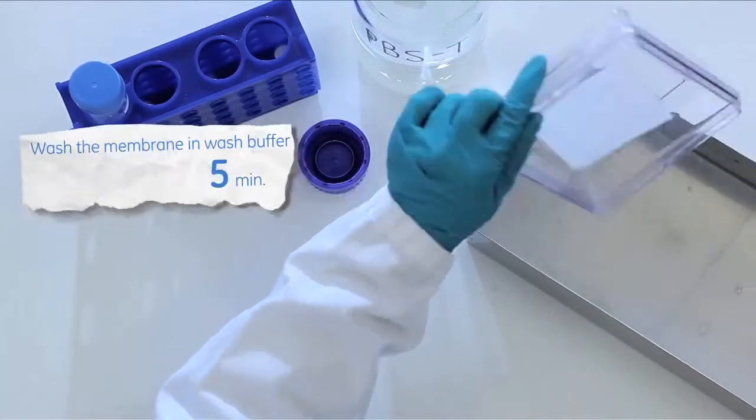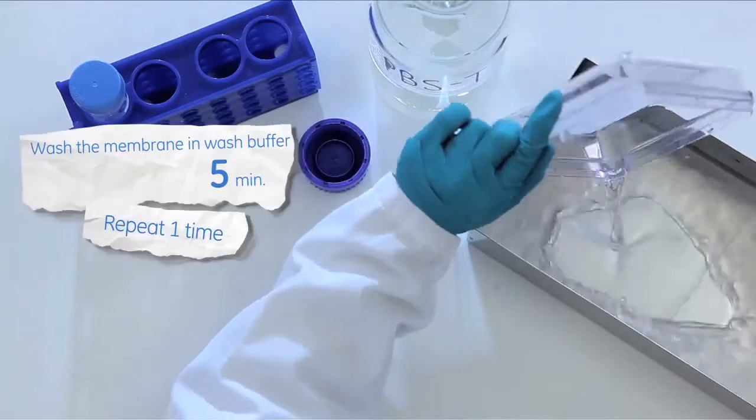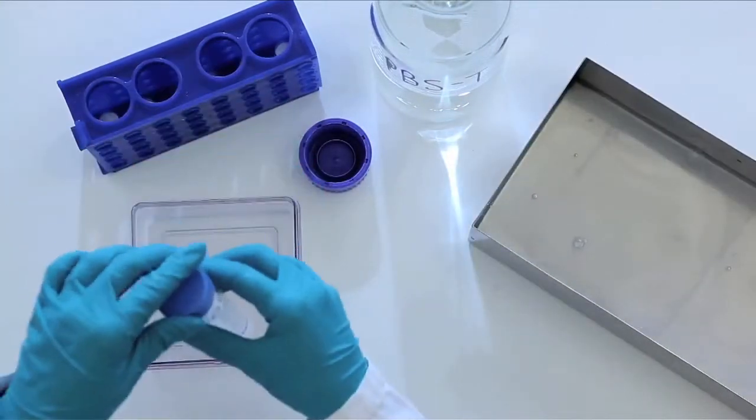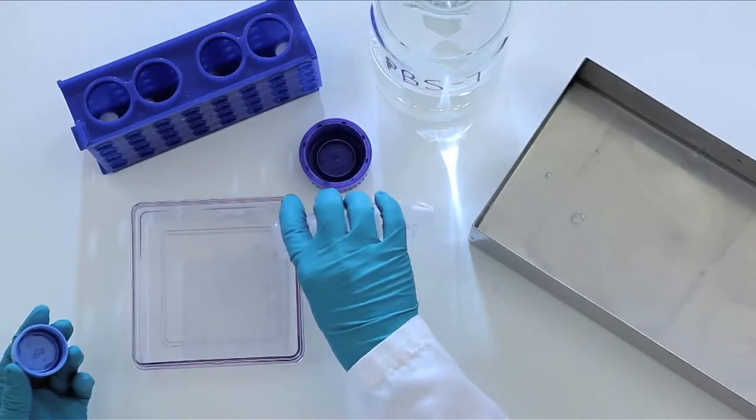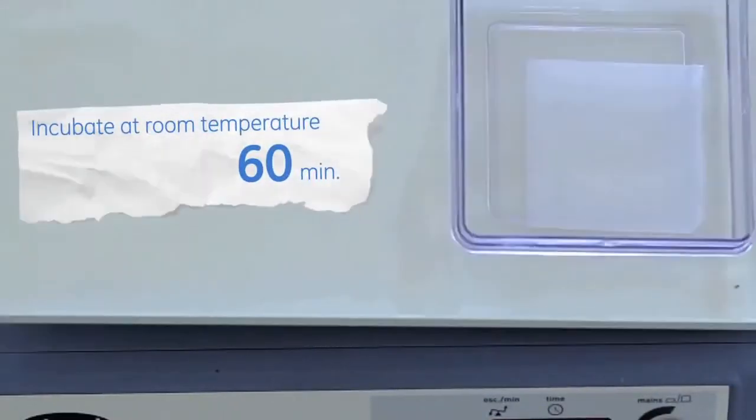Next, wash the membrane in wash buffer for 5 minutes. Repeat once more. Add the primary antibody, diluted in PBST, to the membrane. Then incubate on the rocking table for 1 hour at room temperature.